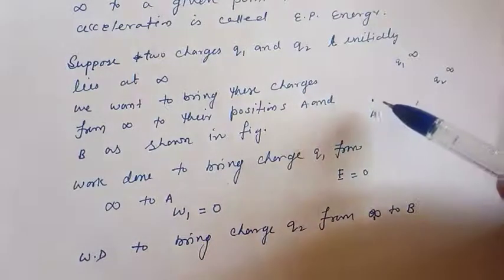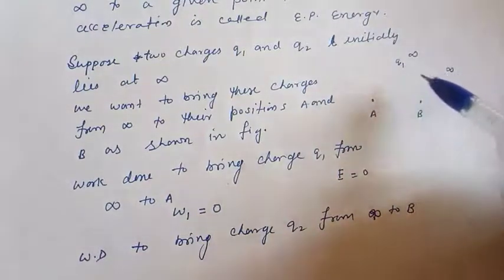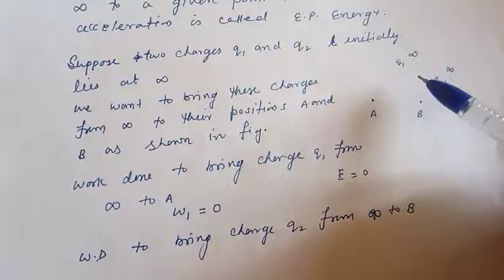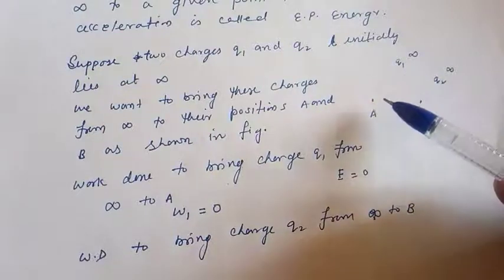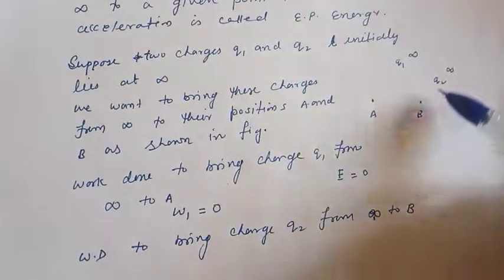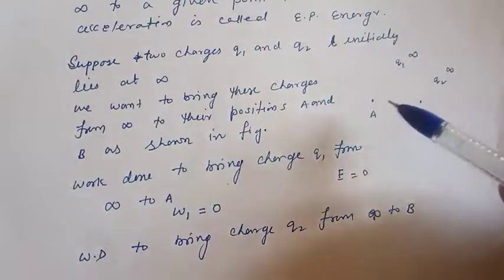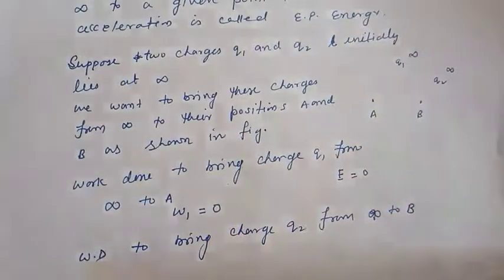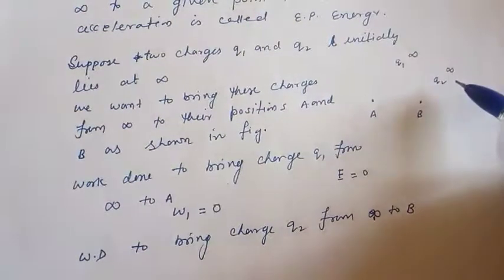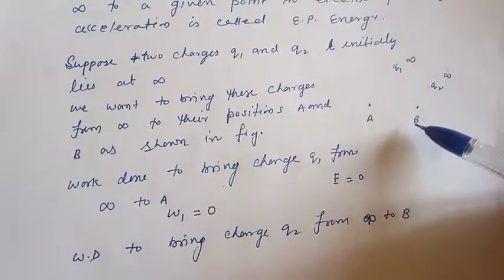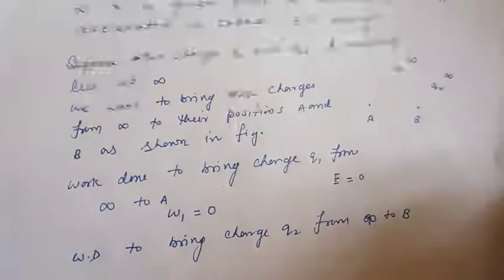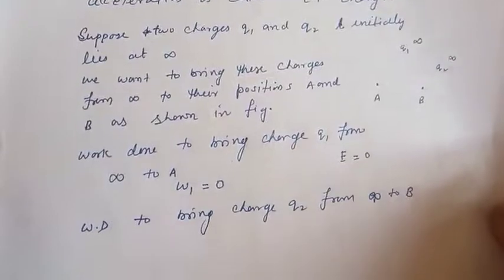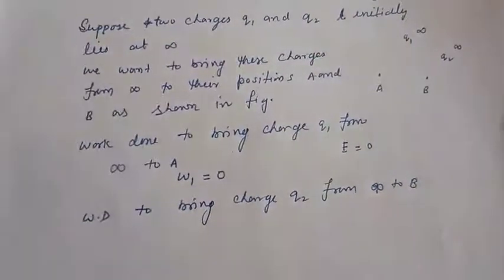So now q1 and q2 suppose they are having the same magnitude, same polarity. So there will be the field of charge q1 that will repel the charge q2. So now to overcome that repulsion, we have to apply external force toward b. So we will apply force, displacement will be there and work done will be there.